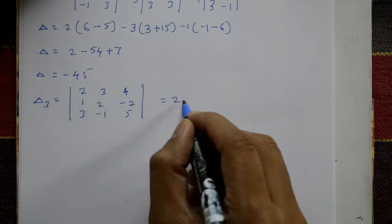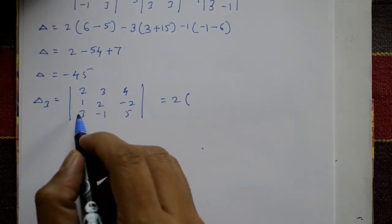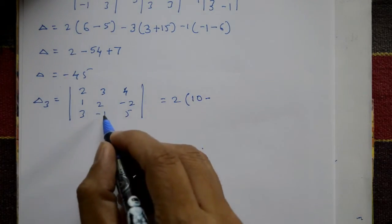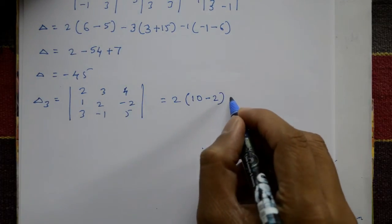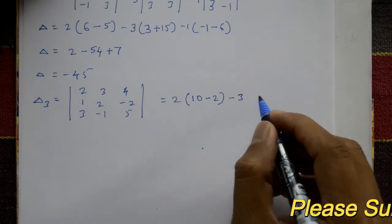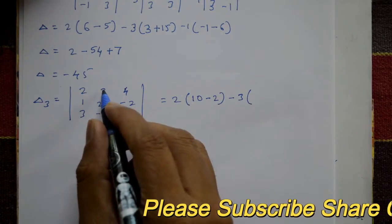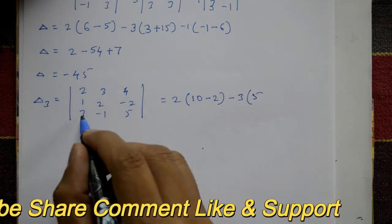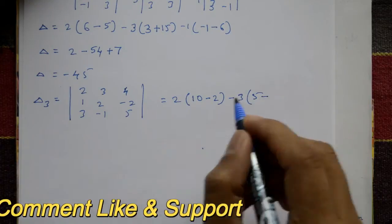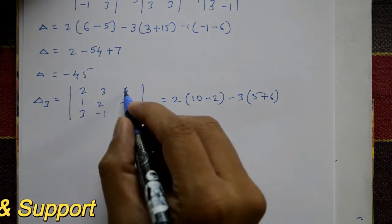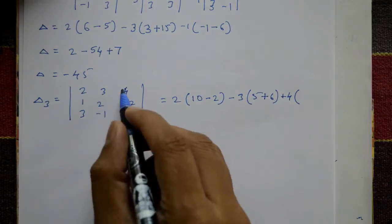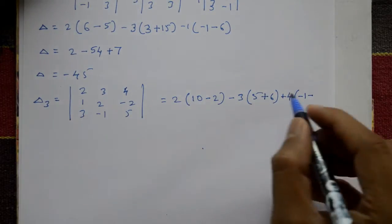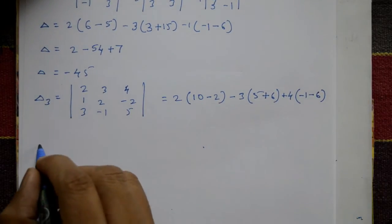Expand Delta 3: take element 2, consider 2 into 5 is 10, minus sign, minus 1 into minus 2 is plus 2. Then minus 3, first row second column, consider 1 into 5 is 5, and 3 into minus 2 is minus 6, minus sign gives plus 6. Then plus 4, first row third column, consider 1 into minus 1 is minus 1, minus sign, 3 into 2 is 6.